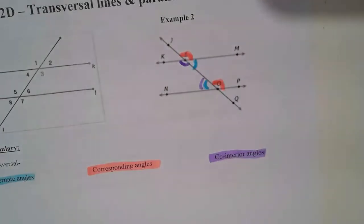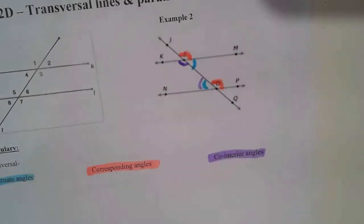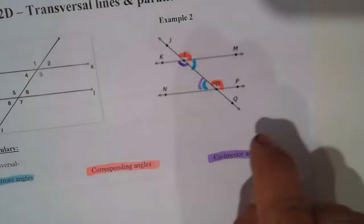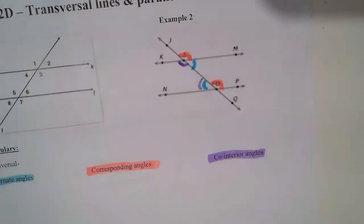So if you know the value of one of these, you take 180 and subtract that value, and you've got the value of its compatriot.